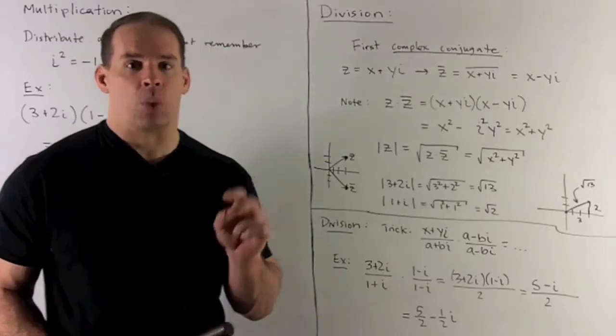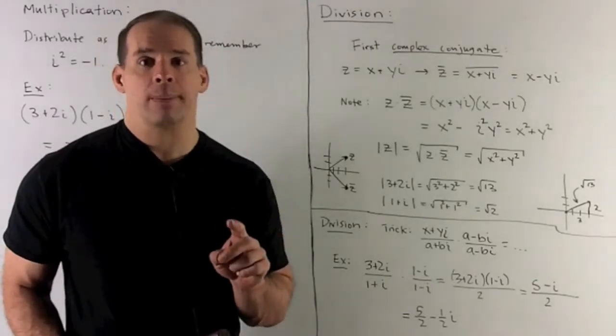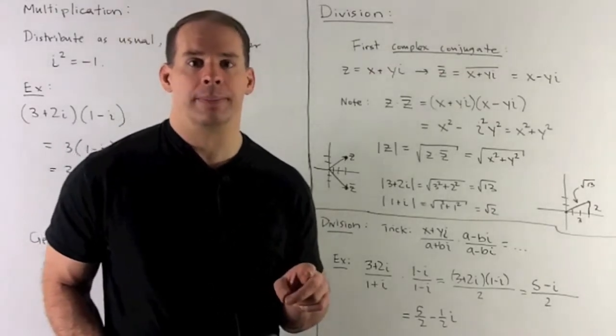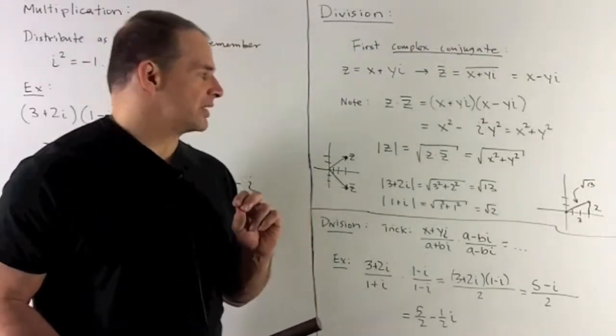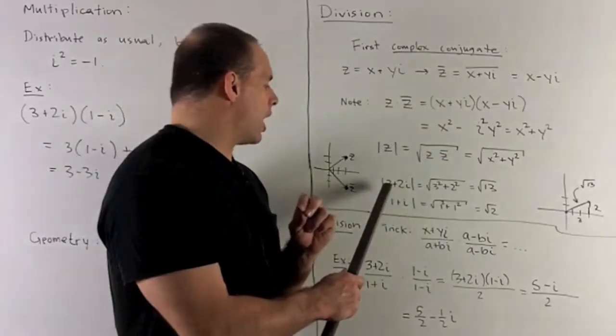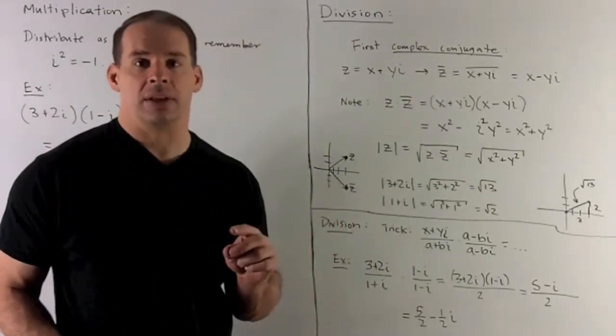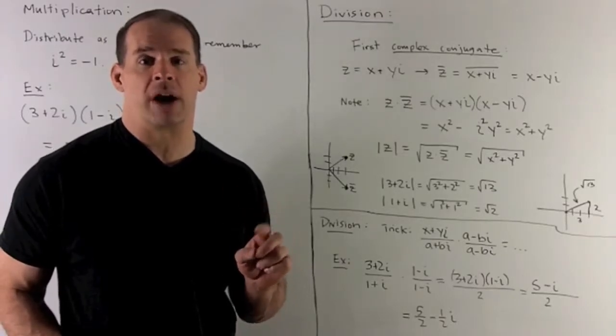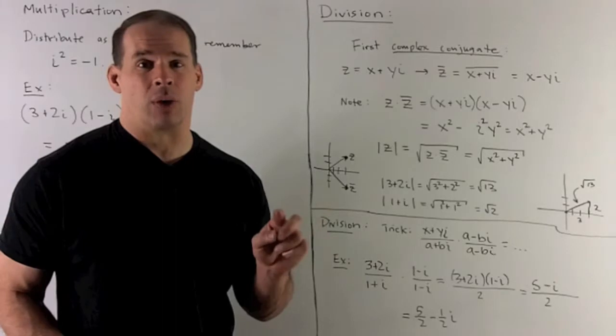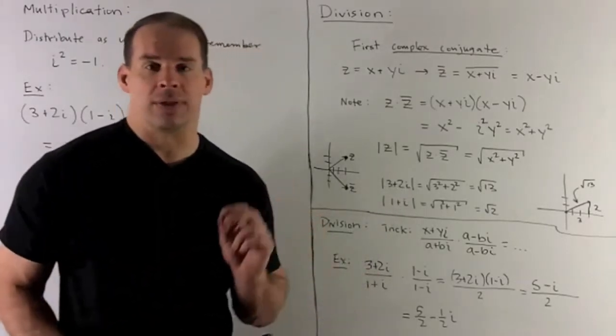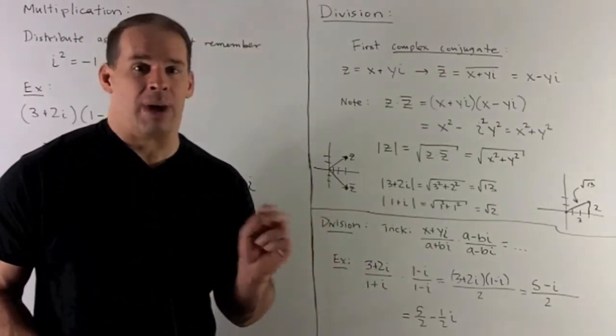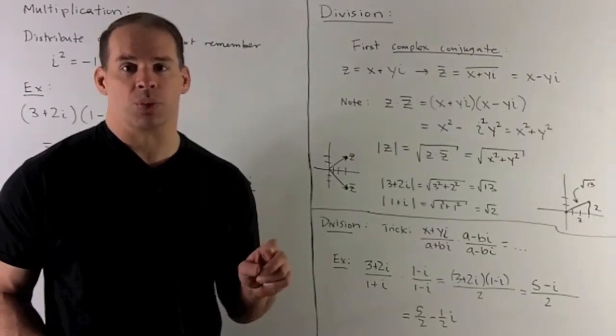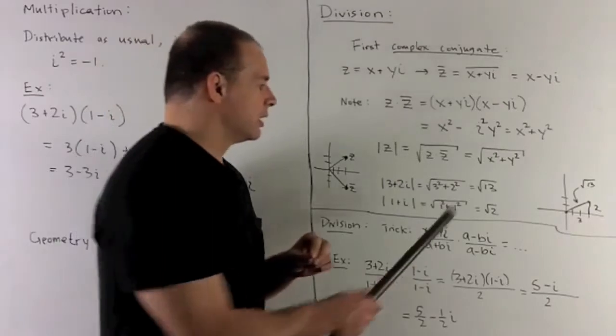So we're going to define the length of z, also called modulus of z, as square root of z times z bar or square root of x squared plus y squared. Some examples, we just saw if I take three plus two i, we take square root of the sum of the squares, so that's three squared plus two squared gives me thirteen, so modulus of this guy is square root of thirteen. Modulus of one plus i, so there's square root of one squared plus one squared, that gives me square root of two.